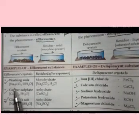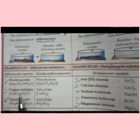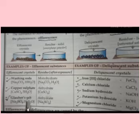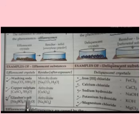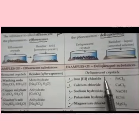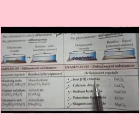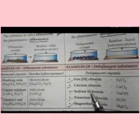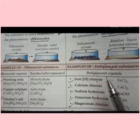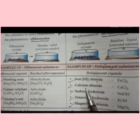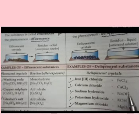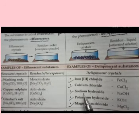Examples of efflorescent crystals: washing soda (Na₂CO₃·10H₂O), copper sulfate, and Glauber's salt. Deliquescent crystals include iron(III) chloride — FeCl₃ — which is the trivalent metallic chloride that is deliquescent in nature. Calcium chloride is a divalent metal chloride that is also deliquescent, along with sodium hydroxide, potassium hydroxide, and magnesium chloride. Learn these deliquescent substances by heart.